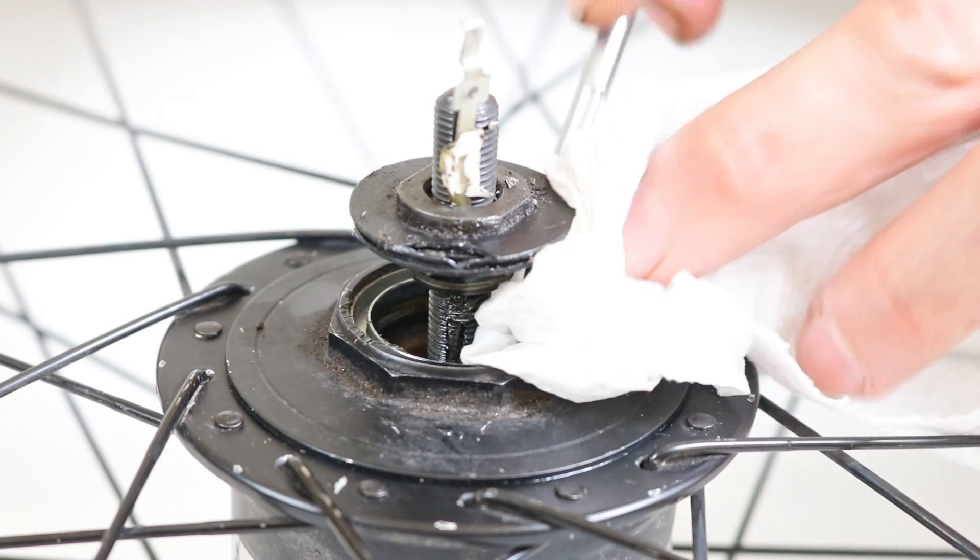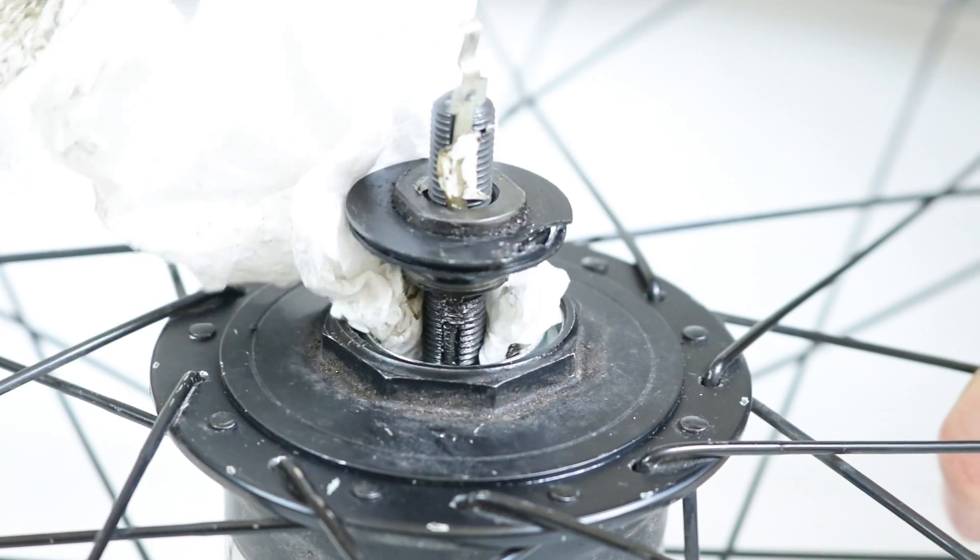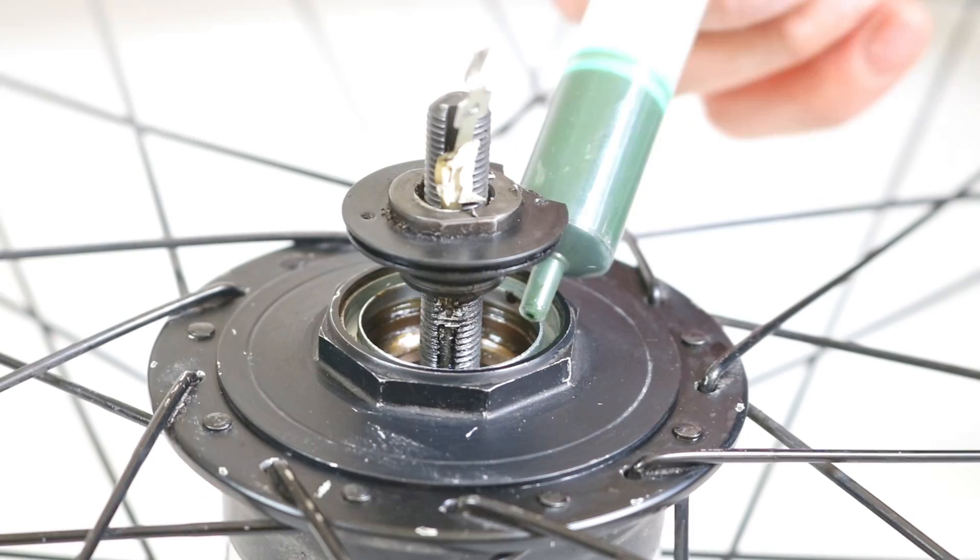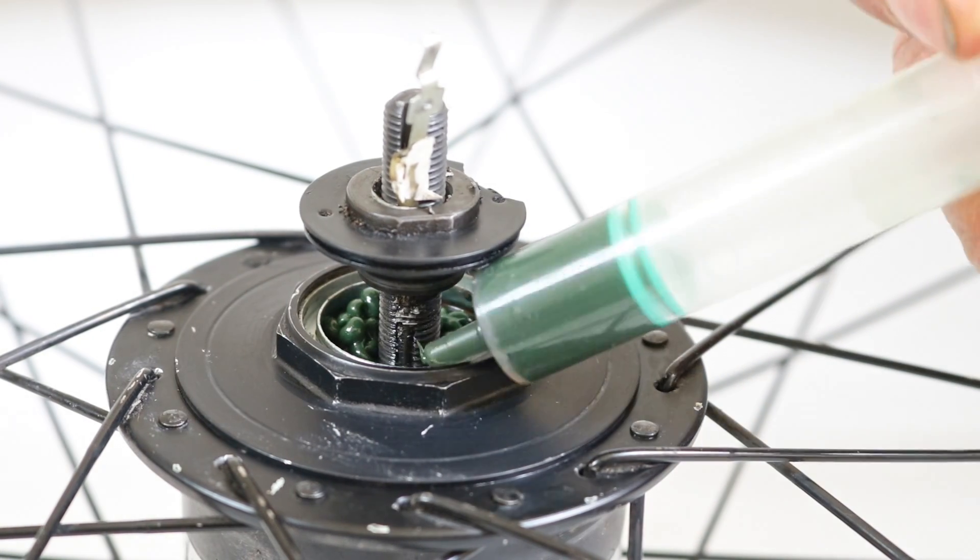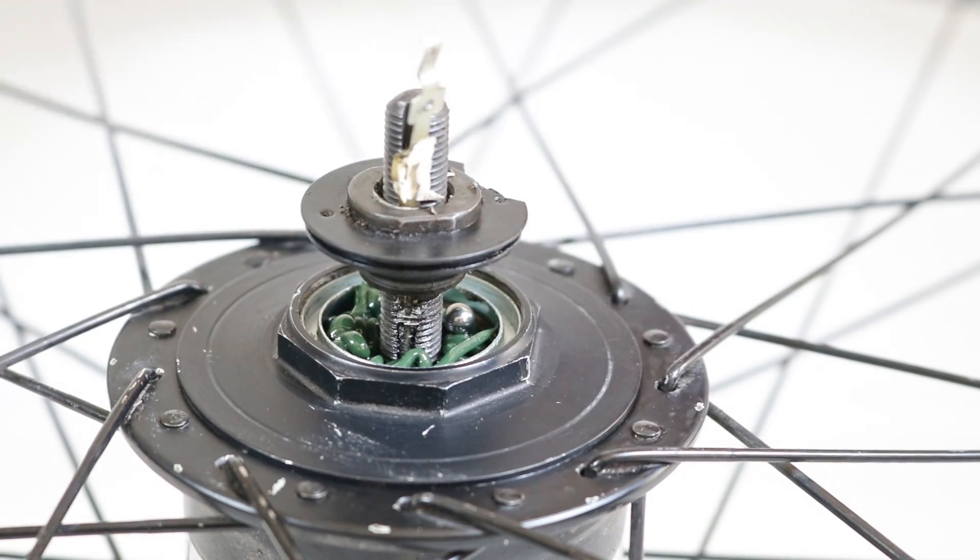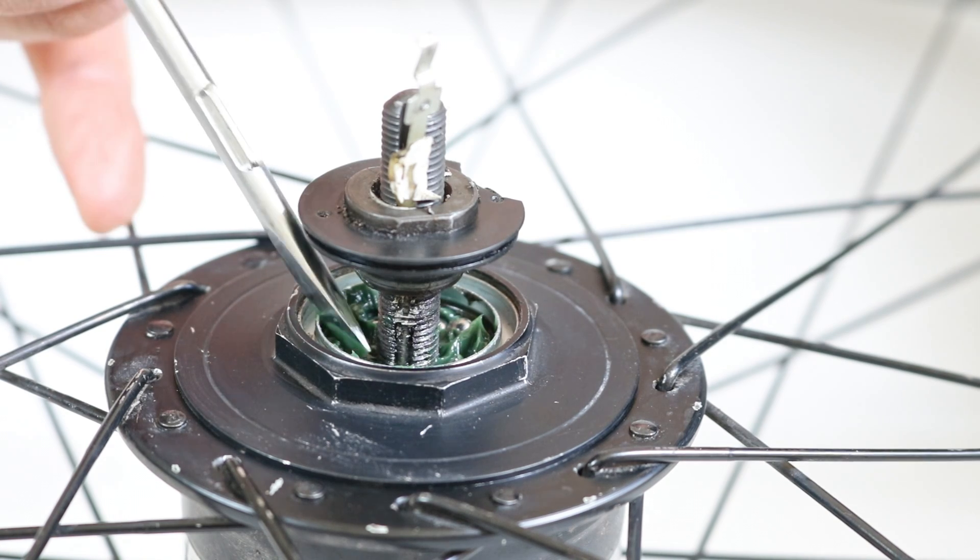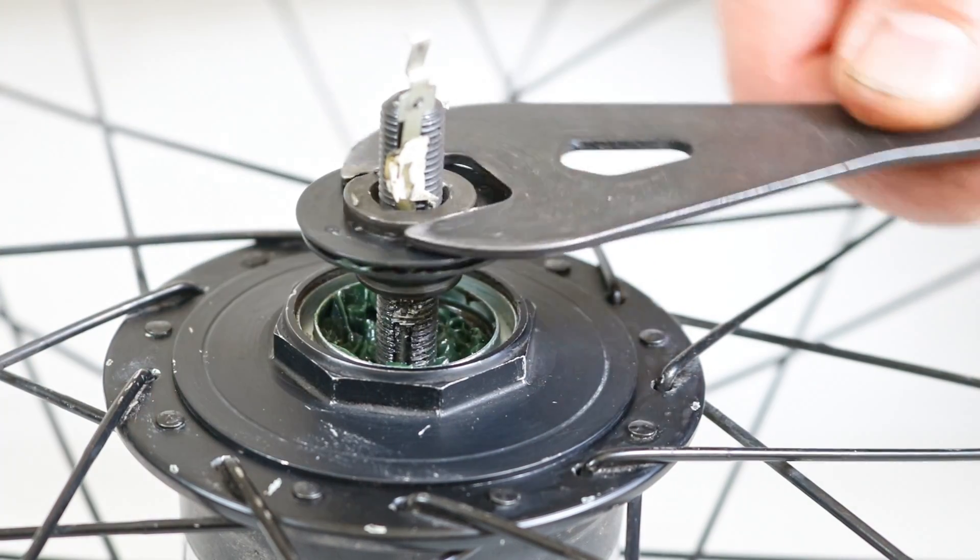Use a degreaser and a cloth to clean the bearings, the cone, and the bearing cup. Apply grease to the bearing cup and reinstall the bearings. Screw the cone onto the axle until it touches the bearings.